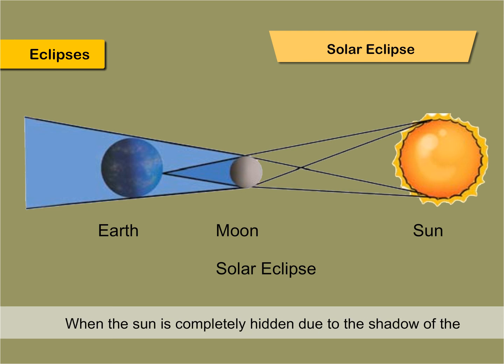When the sun is completely hidden due to the shadow of the moon, it is a total solar eclipse. When only a part of the sun is hidden by the shadow of the moon, it is partial solar eclipse.